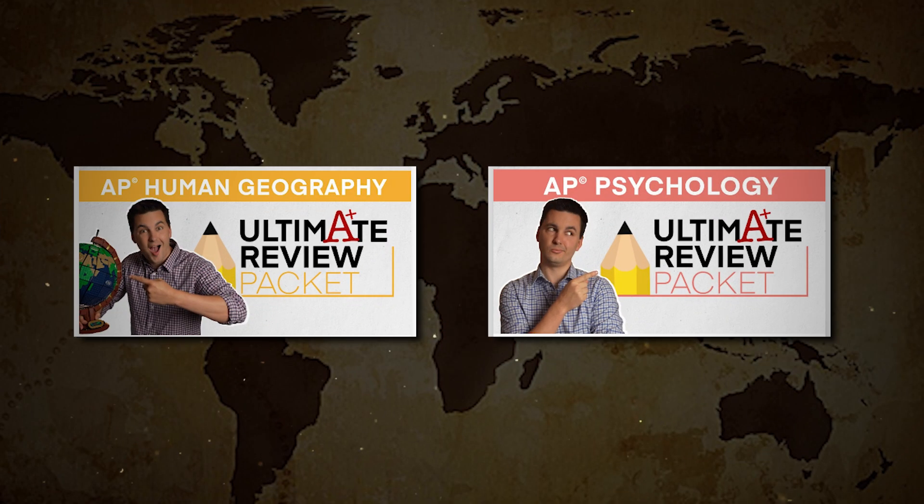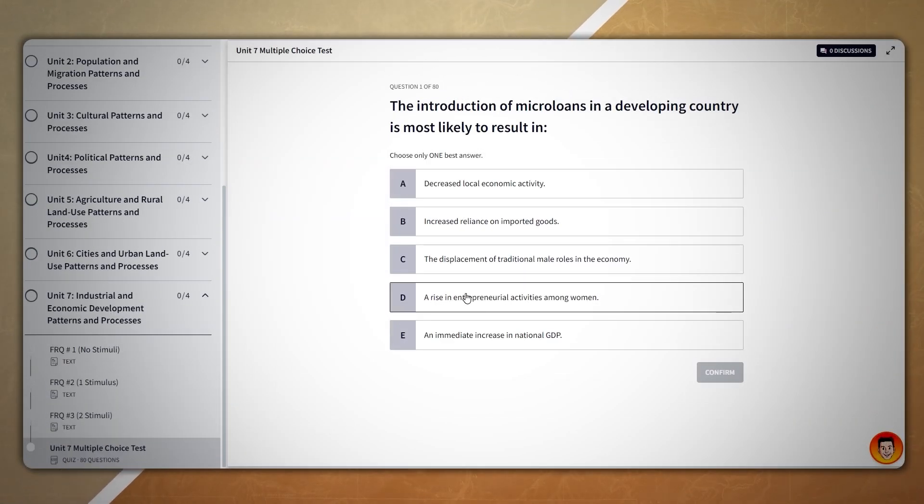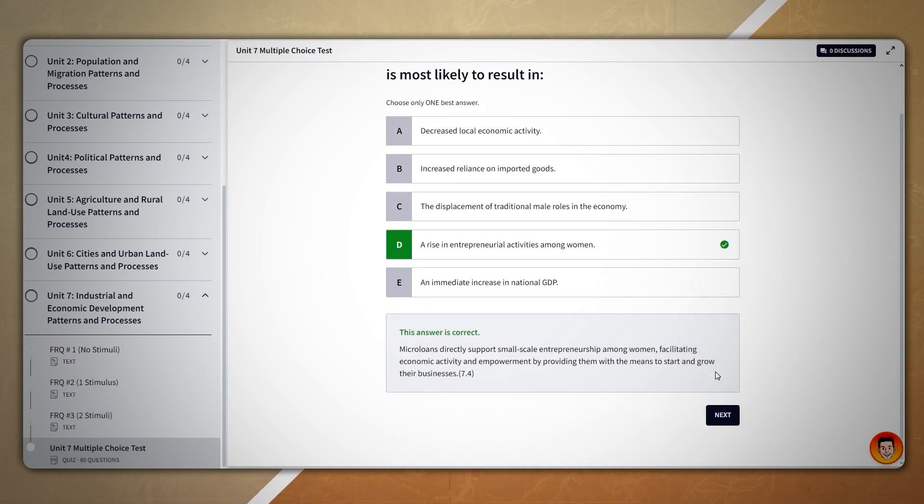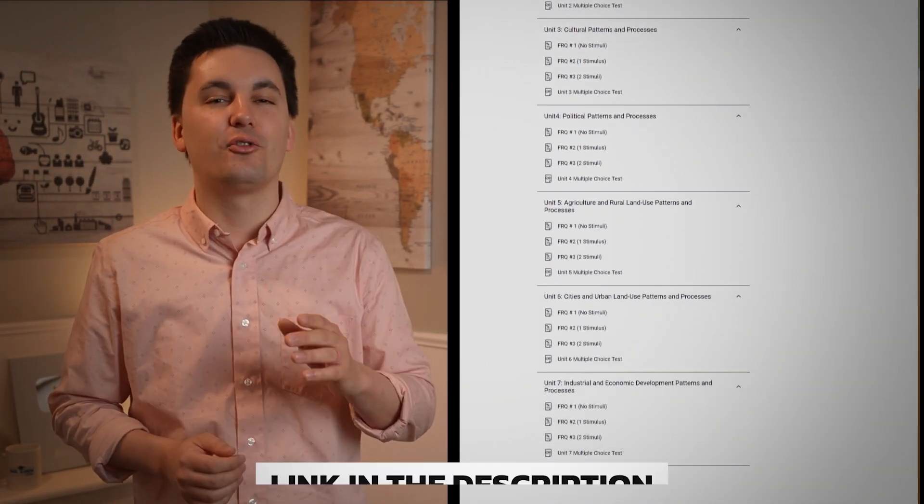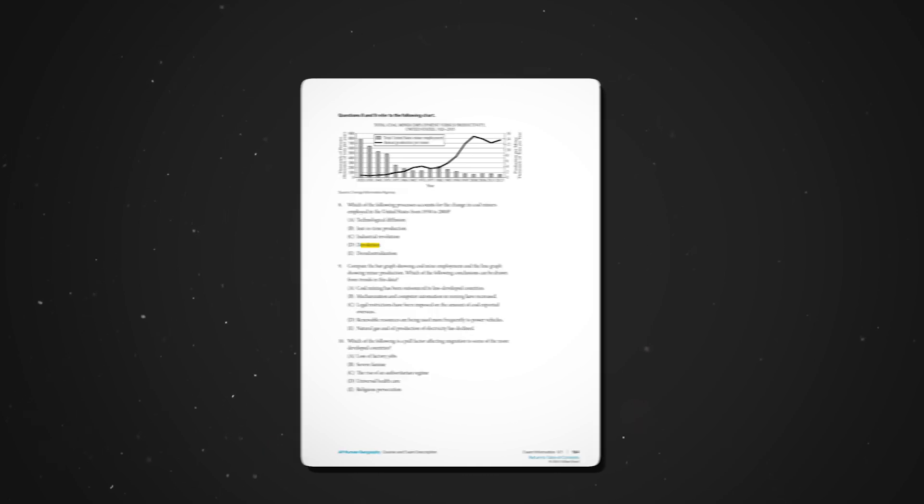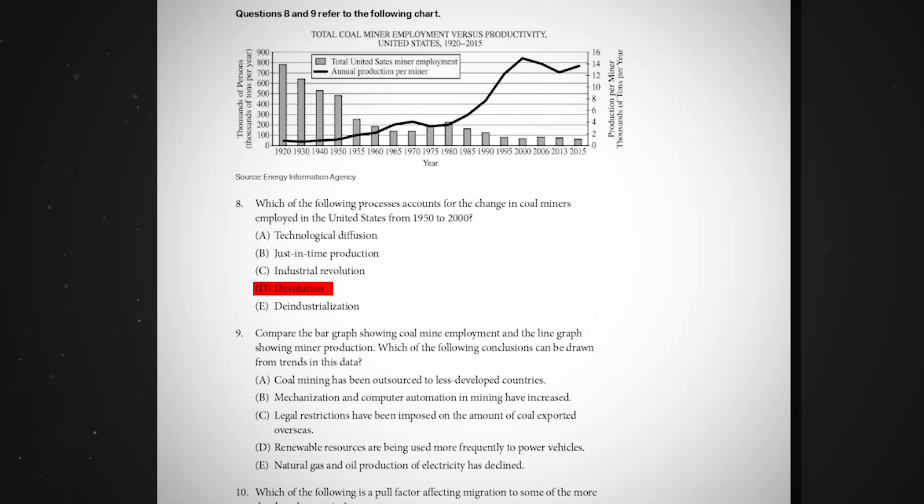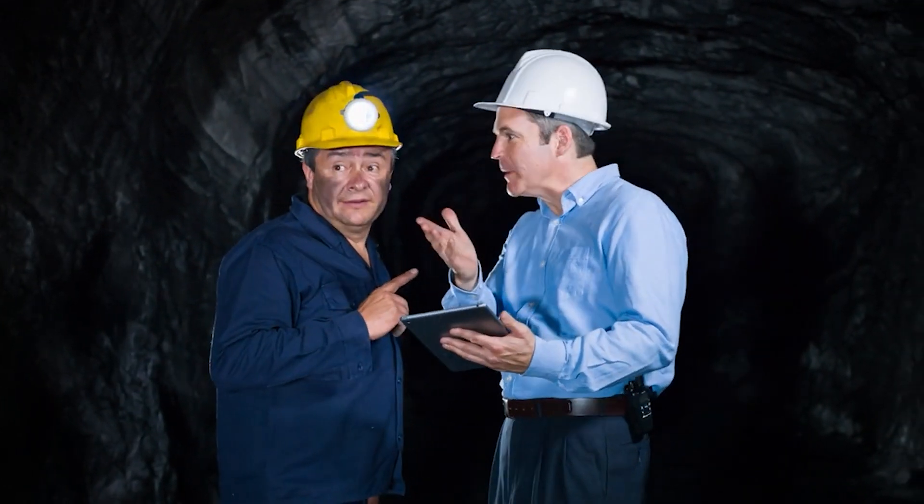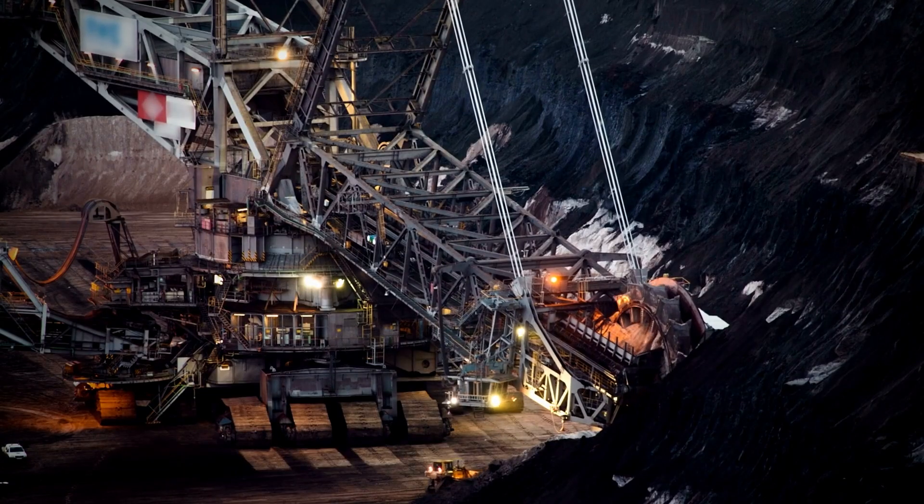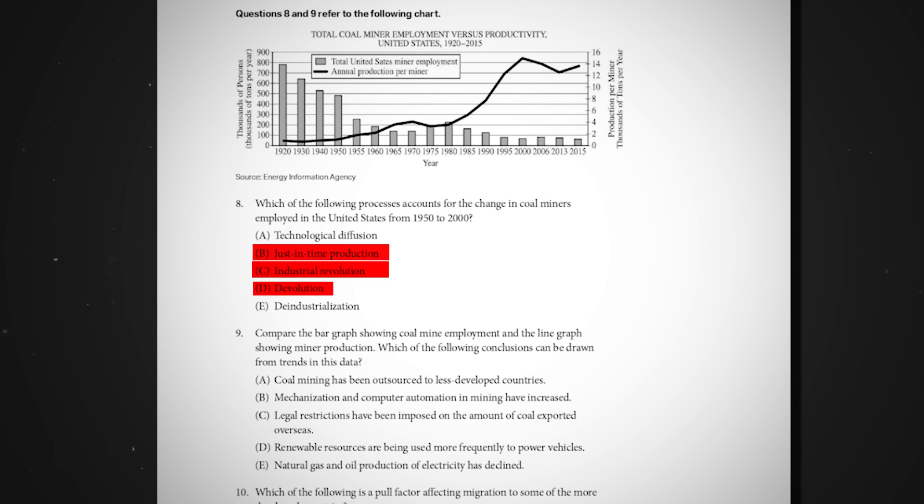This is why in my Ultimate Review Packet, I've included exclusive videos of me taking practice tests. I wanted to help you practice implementing these strategies so that when it comes to the real AP test, you feel prepared. Going back to the question, I can right away eliminate a couple of the answers. Devolution deals with the transfer of power from a central government to regional governments. The Industrial Revolution would increase jobs, plus the time frame is off for the answer, and just-in-time production deals with manufacturing. So we can probably eliminate those answers and now we can see we have it down to a 50-50. One of our answers is technology and diffusion and the other is de-industrialization. Instead of just giving you the answer, you let me know what the answer is down in the comment section below.